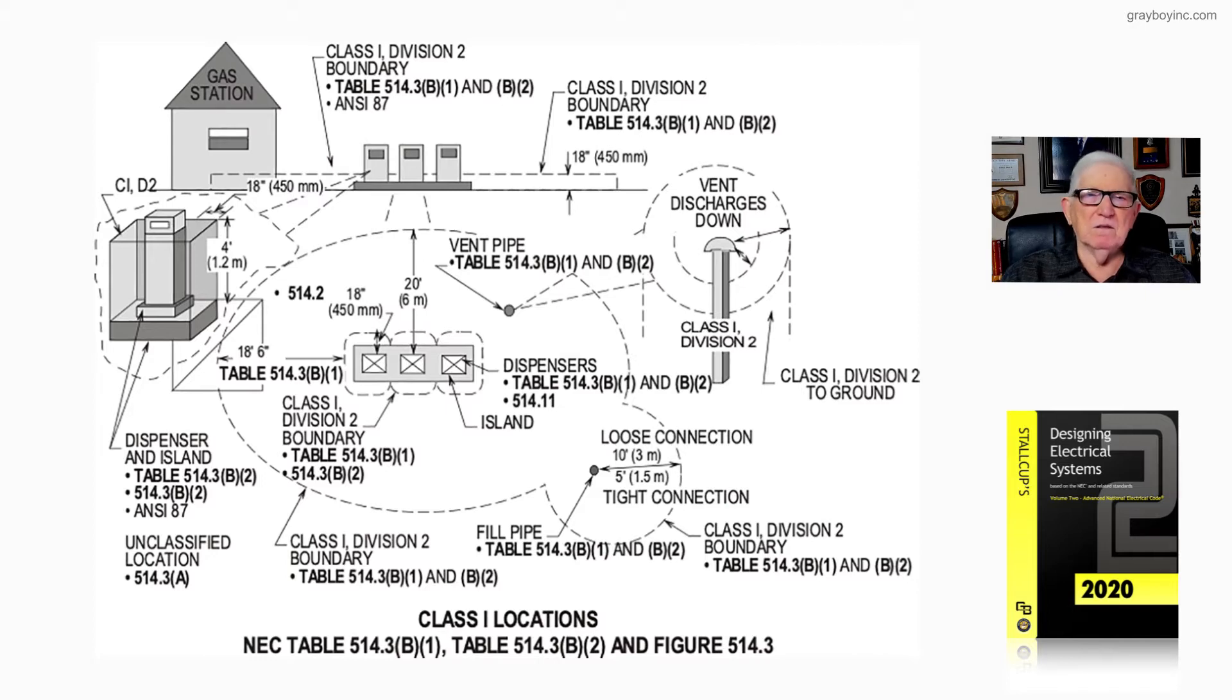Now notice in the gas station you see there, if they have a doorway there, and that room inside the filling station is not pressurized, or they don't have an air conditioning system to keep it well below the ignition temperature of gas or vapor, then the inside is a Class 1 Division 1, 18 inches as you see there as it extends out, 20 feet.